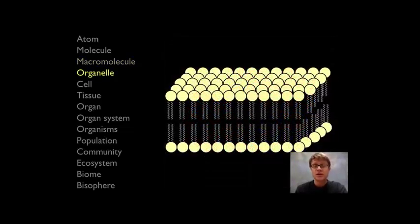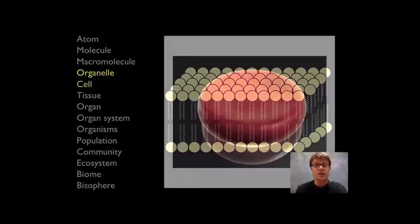Next, if we go, we get to the level of the organelle. These are going to be the tiny organs inside cells. This right here would be the plasma membrane. It's made up of macromolecules, with this phosphate group on the top. And it gives it this emergent property, the ability to separate the outside and the inside of a cell.